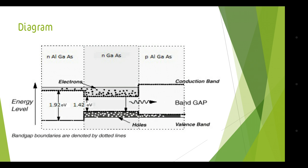Here is the diagram of double heterostructure LED. We can see that there is N aluminium gallium arsenide and P aluminium gallium arsenide, in which N gallium arsenide is sandwiched between these two semiconductors. The bandgap energy of gallium arsenide is 1.42 eV, which is smaller compared to the bandgap energy of aluminium gallium arsenide at 1.92 eV. The refractive index of gallium arsenide is 3.6 and that of aluminium gallium arsenide is 3.2, so gallium arsenide has a comparatively higher refractive index.